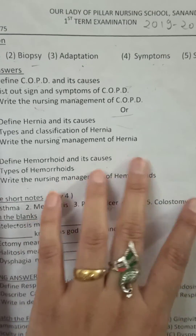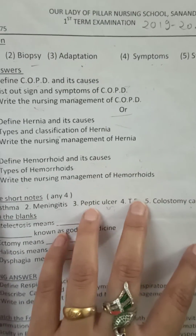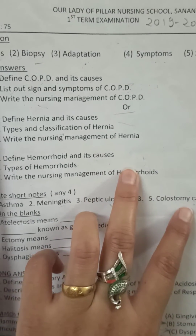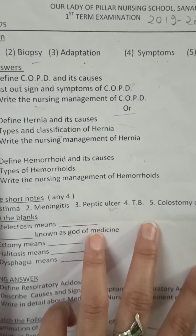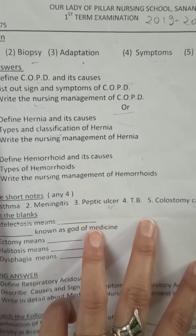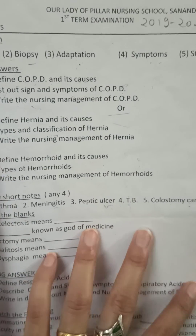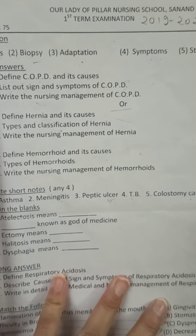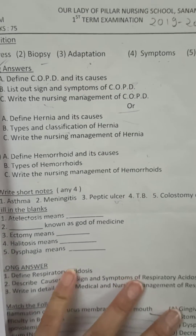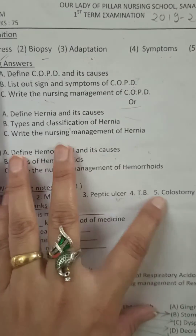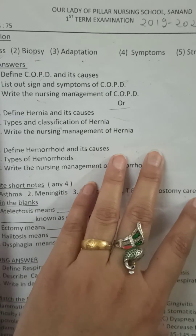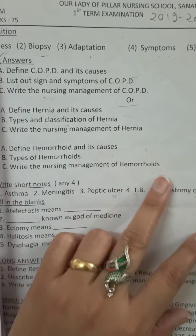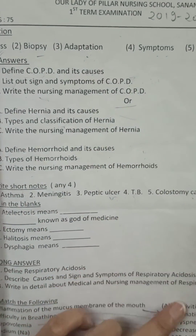There are mainly four types of hemorrhoids: internal hemorrhoid, external hemorrhoid, prolapsed hemorrhoid, and thrombosed hemorrhoid — thrombosed meaning when clotting occurs. Also write the nursing management of hemorrhoids.